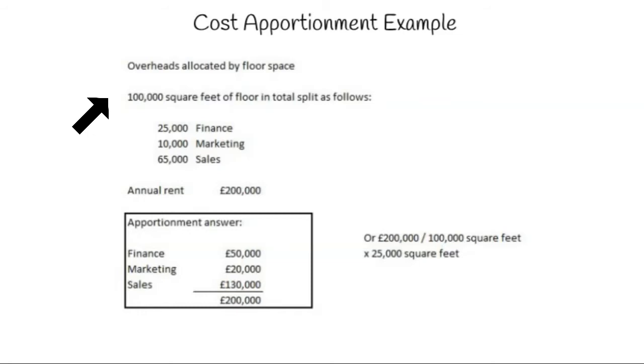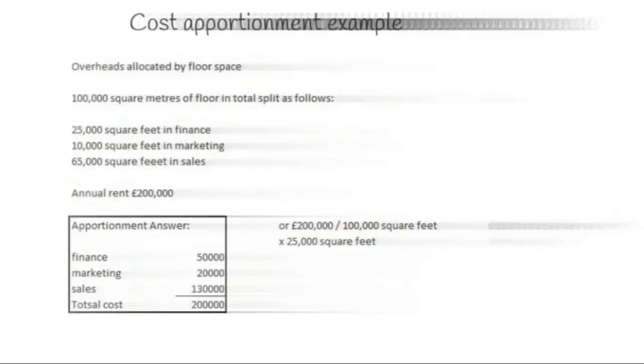Annual rent is £200,000 so we need to split that between finance, marketing and sales. We take the £200,000 divide that by the 100,000 square feet and multiply by the square feet for each department. For finance that's £200,000 divided by 100,000 times 25,000 which gives us £50,000. Marketing gets £20,000 and sales gets £130,000, totaling £200,000.